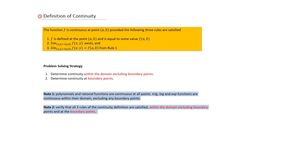Now we consider the definition of continuity. There are three conditions that need to be satisfied; if any one of them is not satisfied, then the function is not continuous. The function is continuous at a point (a, b) provided those three rules are satisfied. The strategy has two steps: first, determine continuity within the domain excluding boundary points; second, determine continuity at boundary points. If both conditions are satisfied, the function is continuous over the full domain including boundary points.